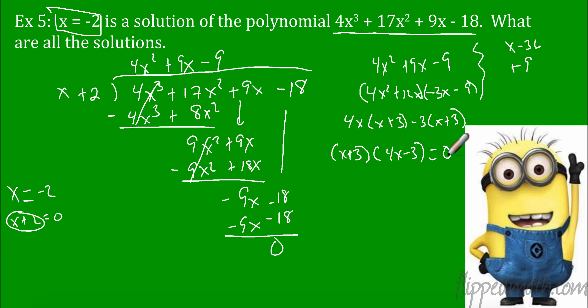So this is going to be x plus 3 times 4x minus 3. And remember, we're solving. So I have to set these equal to 0. x plus 3 equals 0. 4x minus 3 equals 0. Subtract. Over here, add 3 and divide by 4. So our answers are negative 3 and 3 fourths.